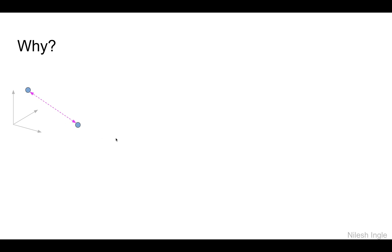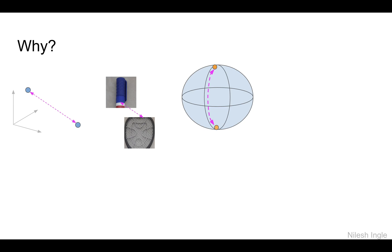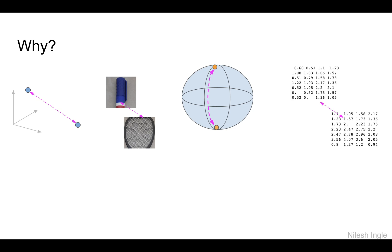We have two data points and we can calculate the Euclidean distance between them. We can also use these methods to find distances between two images to find out how similar or dissimilar they are. Moreover, we can find distances between two locations on Earth or two points on a sphere, because the surface of a sphere is curved and therefore we cannot measure a straight-line distance. We can also measure distance between two matrices or two datasets to find the similarity between those.